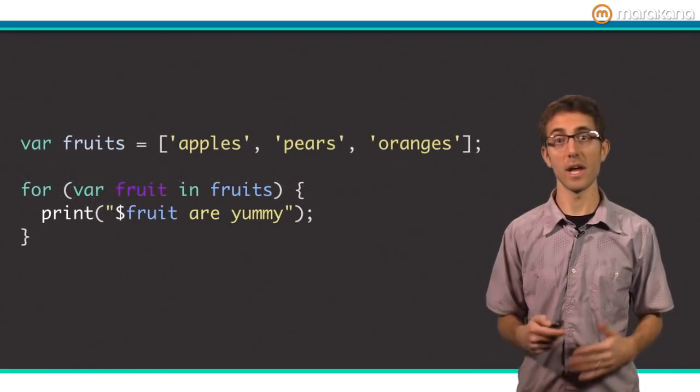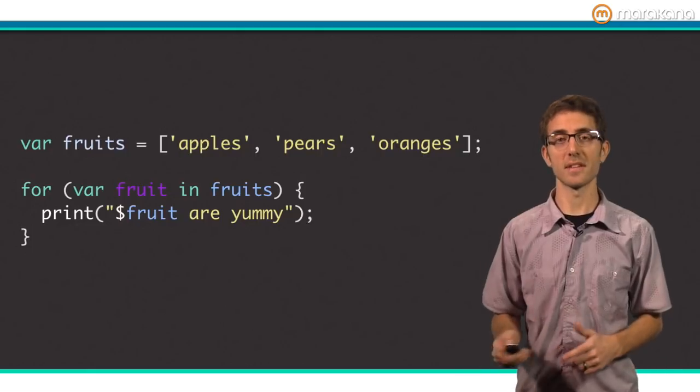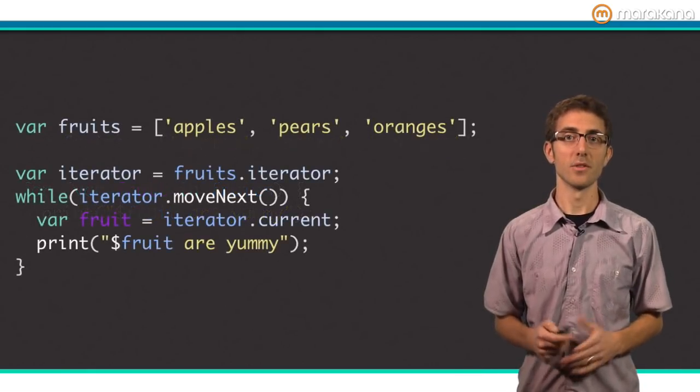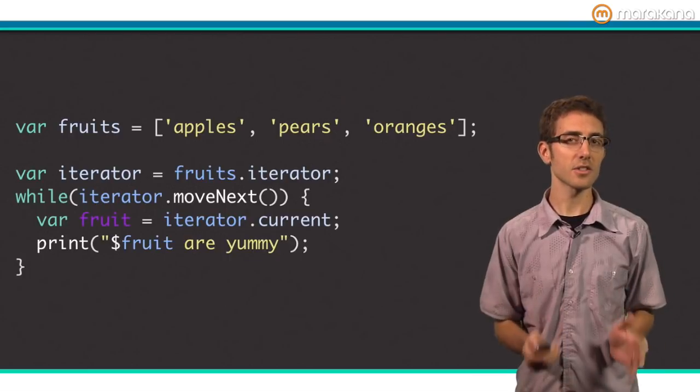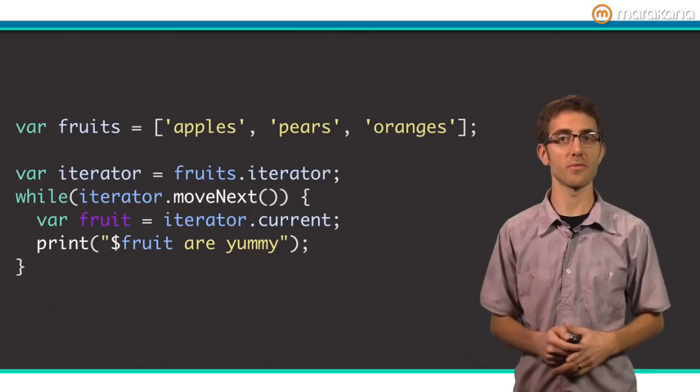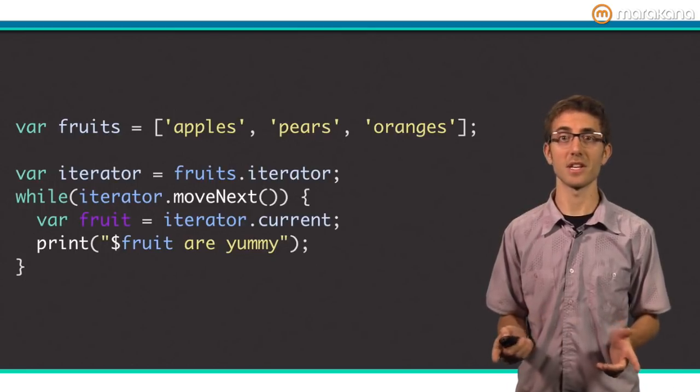If you want to iterate over collection, or any iterable, and you don't care about the loop variable, you can use the for in style loop. Here's an example of a for in loop. The for in loop is just syntactic sugar for the longer iterator form. Either form works, but I'm partial to the for in as it's shorter. And shorter means less code, and less code means less chance for me to get it wrong.